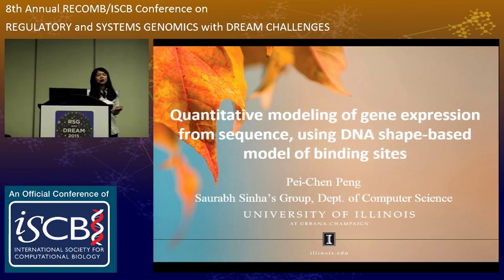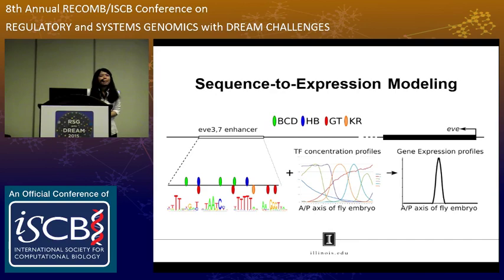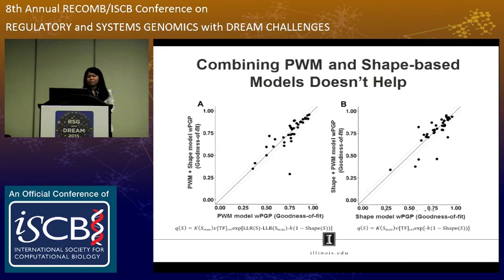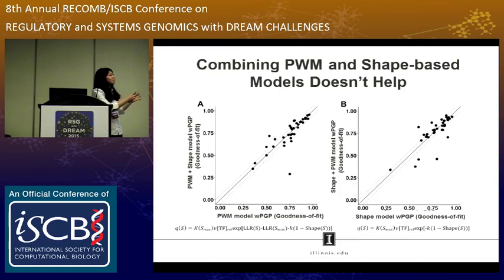Question: Did you consider building models that use both PWM and DNA shape features simultaneously, trained jointly, since your integration conclusion might change if both feature types inform the model together? Answer: We tried two types of integration. In one approach, the LOR score was used as an extra feature for the random forest alongside shape features to produce a combined score. This approach did not show improvement either.